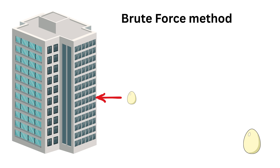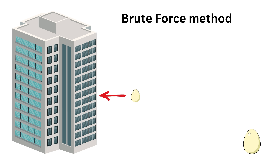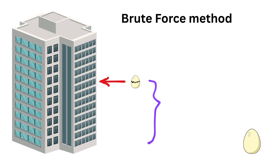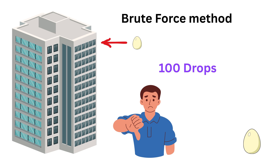Let's first try the simplest way, which is the brute force method. You take the first egg and start dropping it from the first floor, then the second floor, then third, and so on, going up one floor at a time until it breaks. As soon as it breaks, you have your answer. But the problem is with the number of drops. In the worst case, the first egg might not break until the 100th floor, so you'd need up to 100 drops. This method is slow, wasteful, and not clever at all.